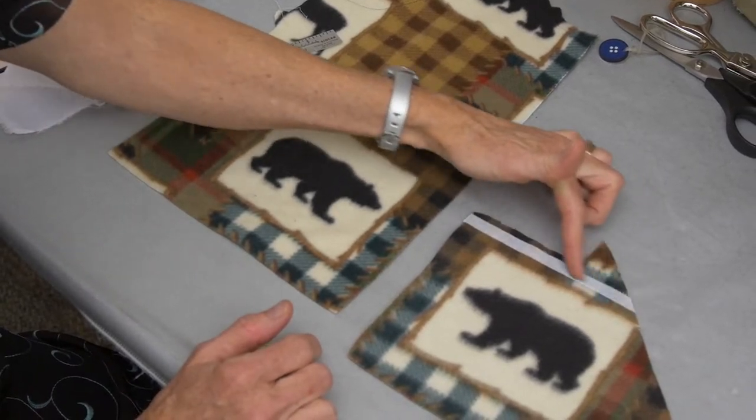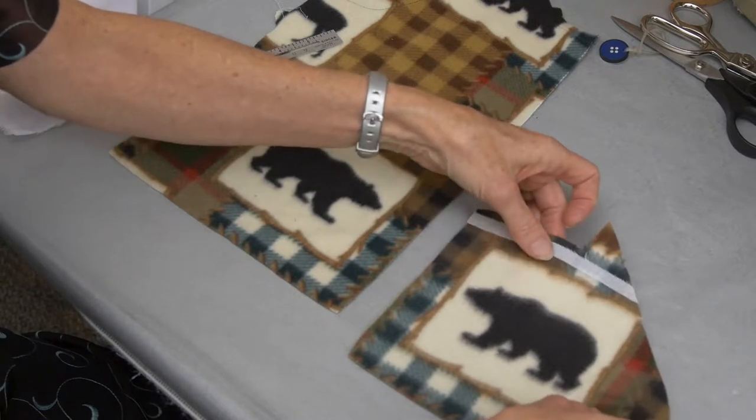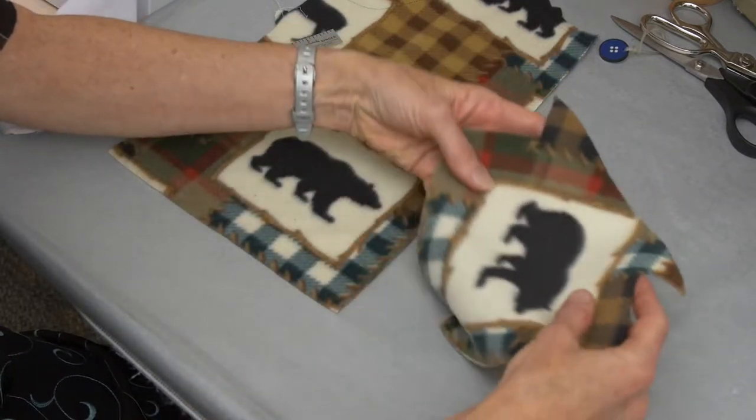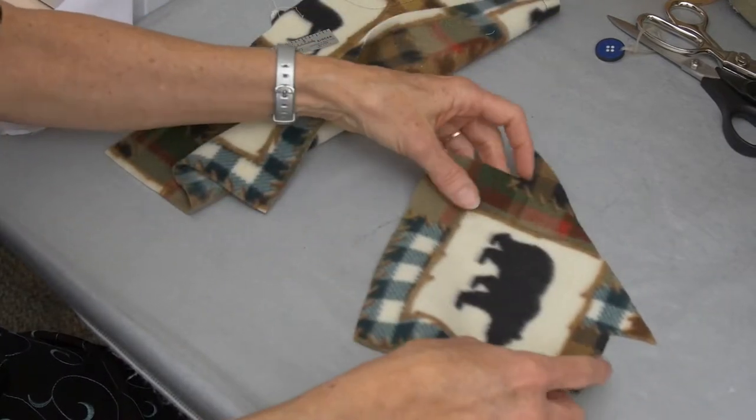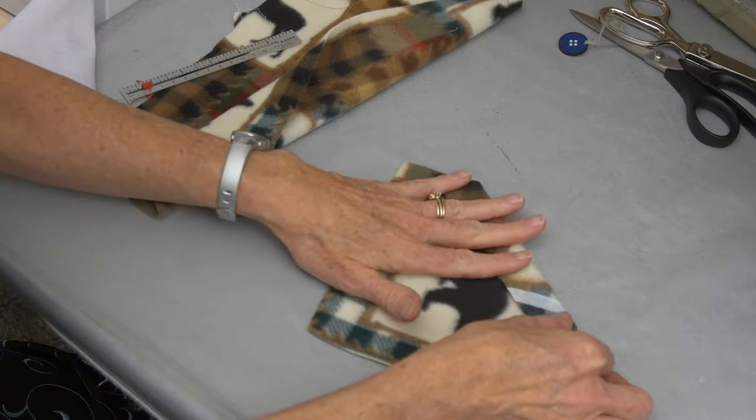So once that stay tape is pressed in place, let it set and cool. Then if you look at your guide sheet, it says the very first step is you are going to hem the top of the opening to your pocket. You will take this and fold that back on the fold line, right sides together.